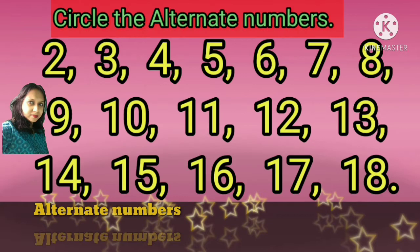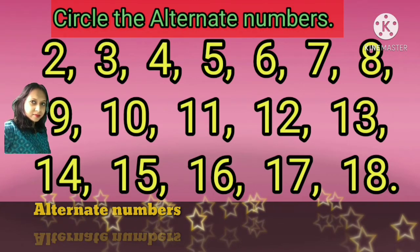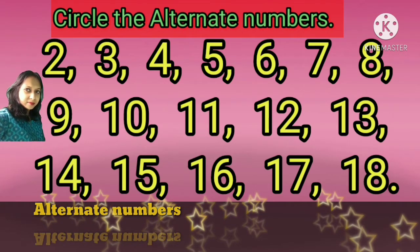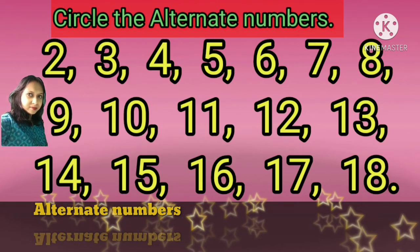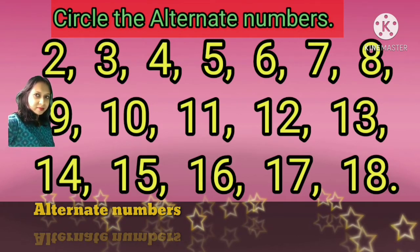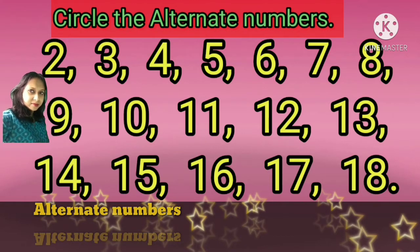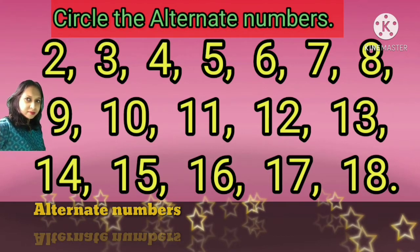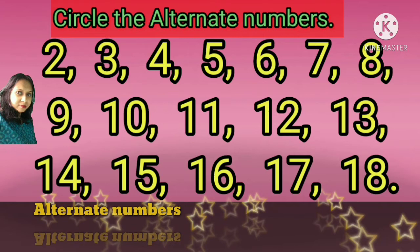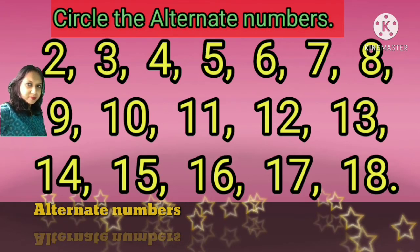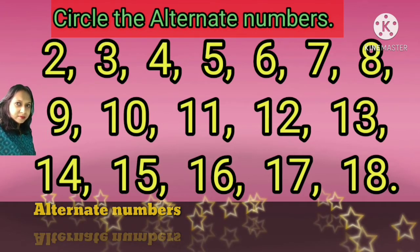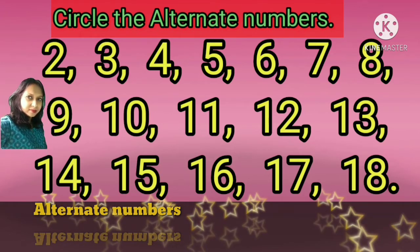Now see all of you, here we have 2, 3, 4, 5, 6, 7, 8, 9, 10, 11, 12, 13, 14, 15, 16, 17, and 18 numbers. Can you tell me, what are the alternate numbers?